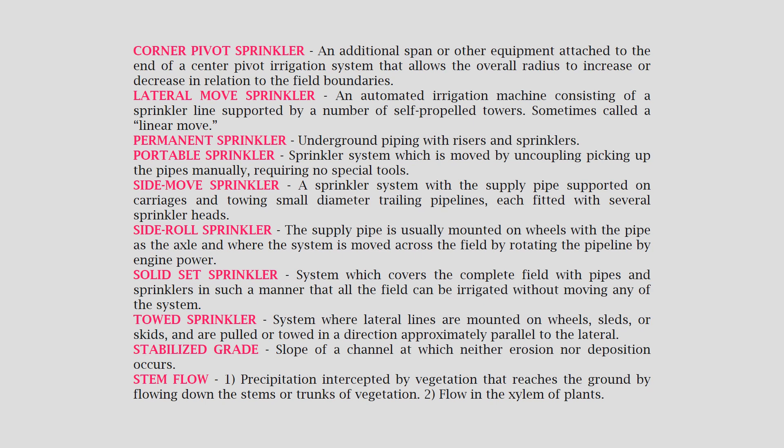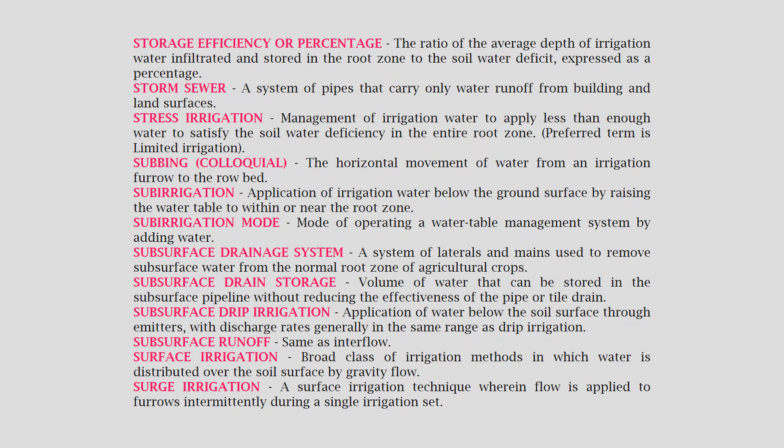Towed sprinkler: a system where lateral lines are mounted on wheels, sleds, or skids and are pulled or towed in a direction approximately parallel to the lateral. Stabilized grade: the slope of a channel at which neither erosion nor deposition occurs. Stem flow: precipitation intercepted by vegetation that reaches the ground by flowing down the stems or trunks of vegetation; also refers to flow in the xylem of plants.